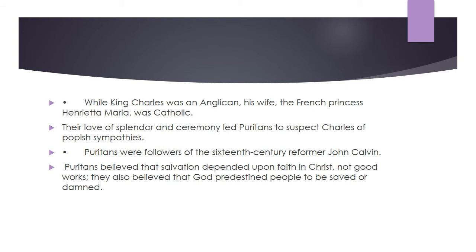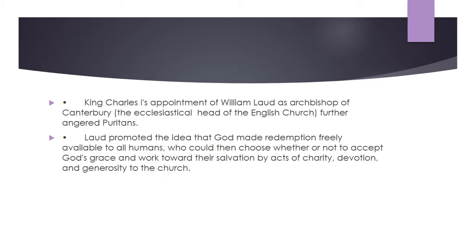While King Charles was an Anglican, his wife, the French Princess Henrietta Maria, was Catholic. The love of splendor and ceremony led Puritans to suspect Charles of Popish sympathies. Puritans were followers of the 16th century reformer John Calvin. Puritans believed that salvation depended upon faith in Christ, not good works, and that God predestined people to be saved or damned. King Charles I's appointment of William Laud as Archbishop of Canterbury, the ecclesiastical head of the English church, further angered Puritans.